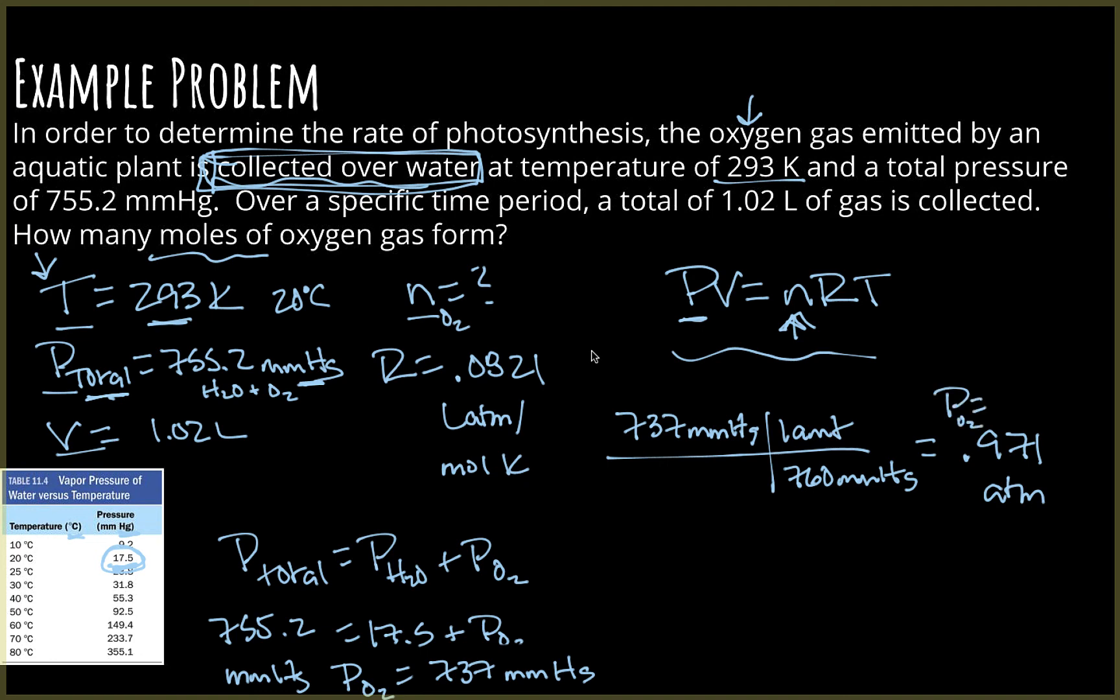So now I have a pressure, a volume, moles is what I'm looking for, I have my R value and I have my temperature. So I'm going to sub all of those in. 0.971 ATM times volume, 1.02 liters equals N, R, 0.0821 liter ATM per mole K times temperature, 293 Kelvin. So when I solve for N, my value for N is 0.0412 moles of O2.